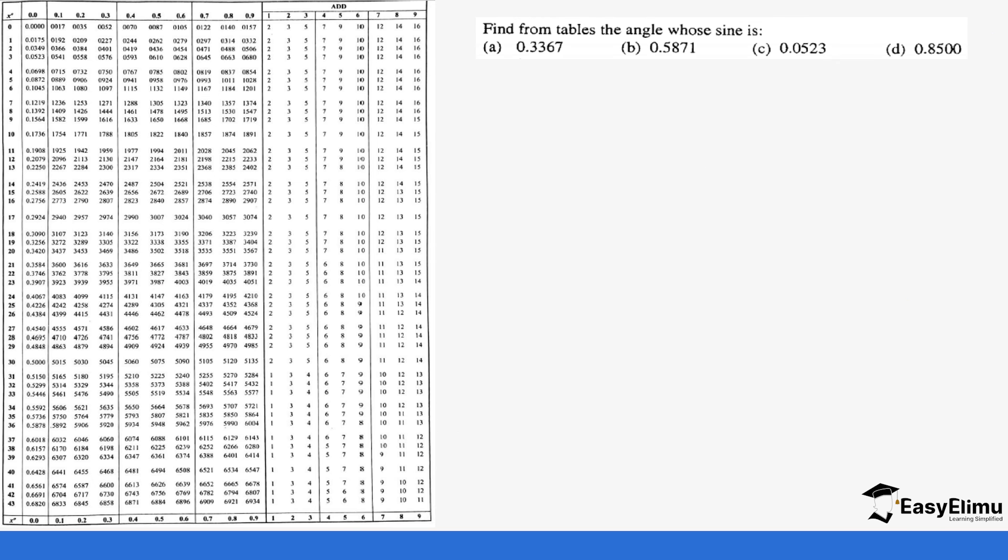Let's do another example. You're supposed to get from the table the angle whose sine we have. Before we had the angle and were looking for the sine; now we have the sine and are looking for the angle. Sine x equals 0.3367. We have 0.3355 which gives us 19 degrees, and 0.6 up. We need 0.3367.